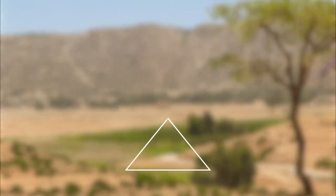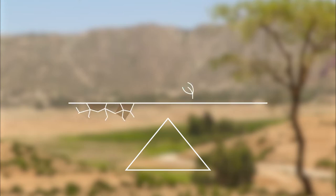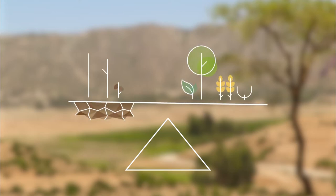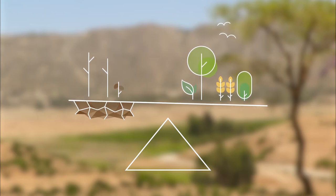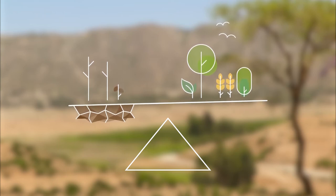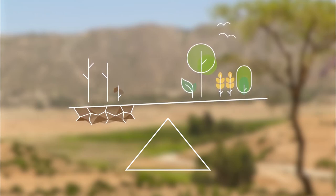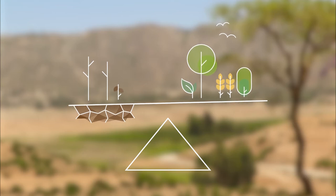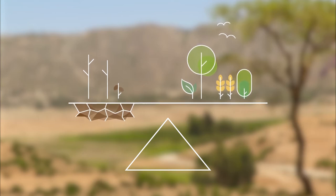Land Degradation Neutrality, abbreviated LDN, describes a world in which no land is lost to degradation at the bottom line. To achieve this, provident planning is key. The objective is to avoid degradation in the first place.